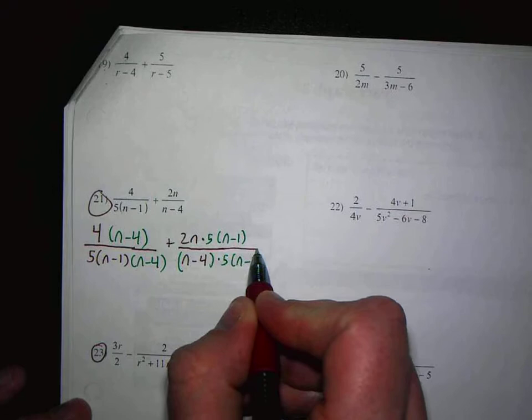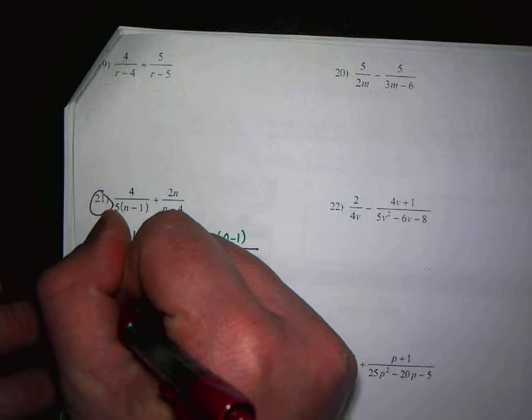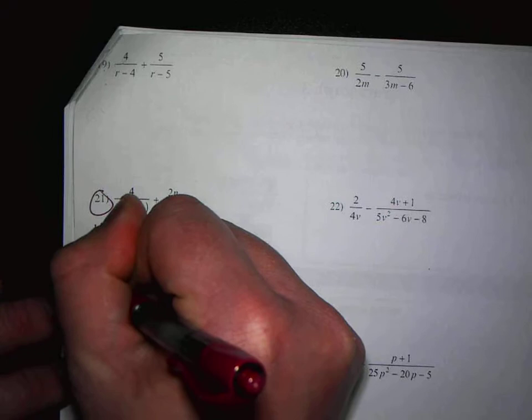So now I have a common denominator. It's 5(n minus 1)(n minus 4). So you have 5(n minus 1)(n minus 4). And on top, I'm going to get 4(n minus 4).